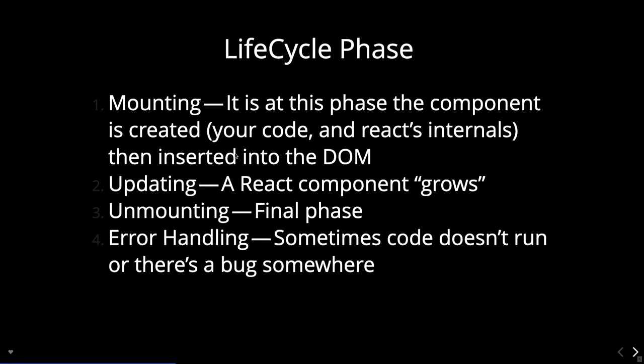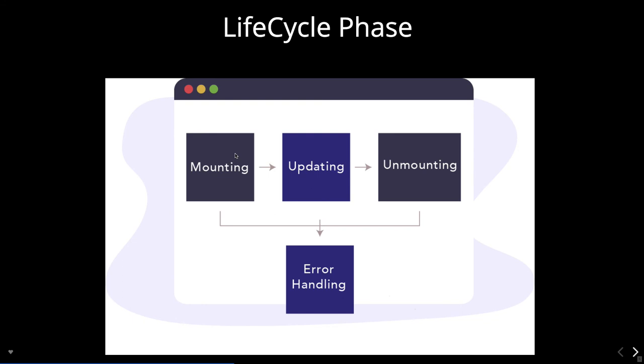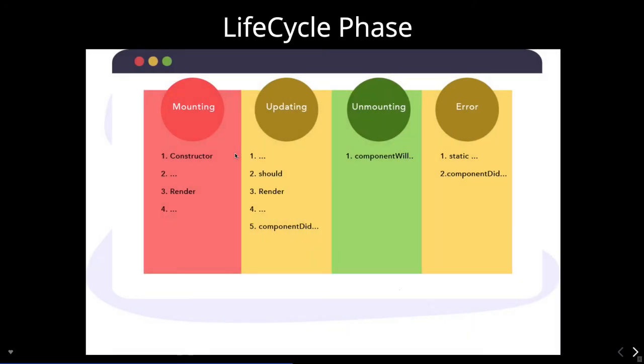The whole React lifecycle can be divided into multiple phases. Mounting is when your component is first launched in the browser or a full reload happens. Updating is when your component's state changes. Unmounting is when you are removing a component from a DOM node. There is also an error handling phase for when errors occur during mounting, updating, or unmounting.